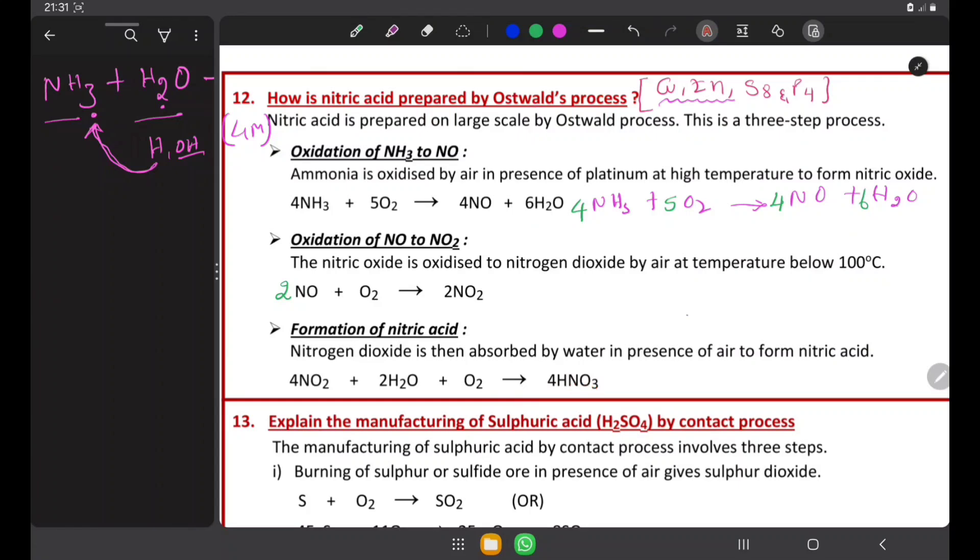Ostwald's process is an industrial process in which we can prepare nitric acid in a large scale. It means a huge amount of nitric acid can be prepared for industrial purpose.